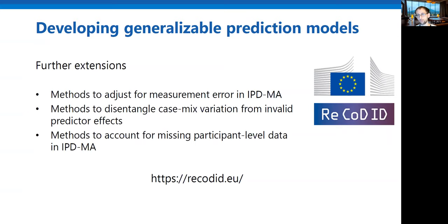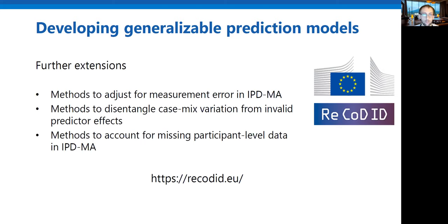Within the RecordIt program, we've also been working on methods to adjust for measurement error. When combining data from different sources, data is often measured using different instruments at different times and with different quality. These differences may affect the accuracy of your prediction model and the heterogeneity in your data. For example, if blood pressure in the development dataset was measured with a different instrument than in the new population, we need to somehow match instruments — accounting for these differences becomes important when making predictions in a new population.